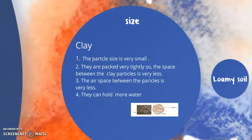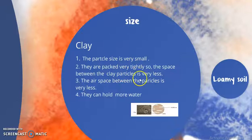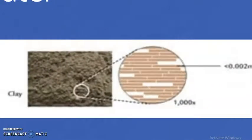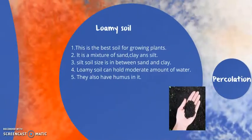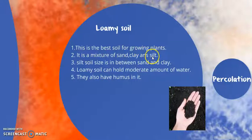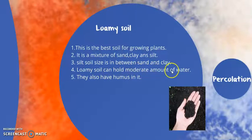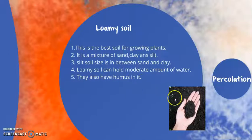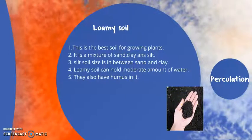Next is clay soil. The clay soil particles are very fine, small, and minute — they are very tightly packed and do not have air between them, so they can hold more water. As they are finer particles, they do not allow water to pass through easily. The third soil is loamy soil. It is the best soil for growing plants — a mixture of sand, clay, and silt. The size of silt is between sand and clay. Loamy soil can hold a moderate amount of water — less than clay soil, more than sandy soil. It also has humus, making it ideal for plants to grow.